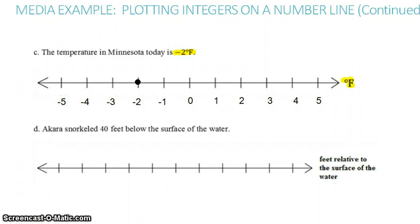Last one. Acara snorkeled 40 feet below the surface of the water. And then looking at our labeling, it wants us to label or plot feet relative to the surface of the water. So since Acara was below the surface of the water, that means our 40 feet is going to be negative. So we're going to want negative 40 to plot the number negative 40.